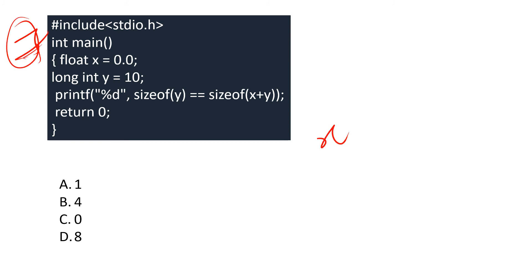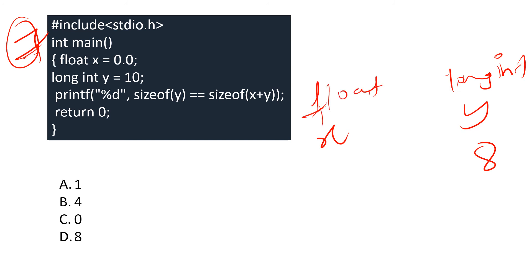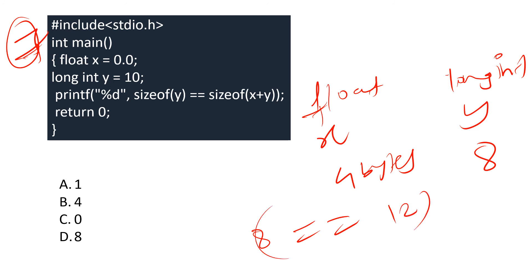Here comes the seventh question. There are two variables: x is a float and y is a long int. We print using %d: whether sizeof(y) == sizeof(x) + y. sizeof(long int) is 8 bytes and sizeof(float) is 4 bytes. So sizeof(x) + y = 4 + y. Since sizeof(y) = 8 and that won't equal sizeof(x) + y, it returns 0. Option C is the correct answer. Tip: when == is used, it returns 1 if true and 0 if false — so the answer is either 0 or 1, eliminating options B and D.